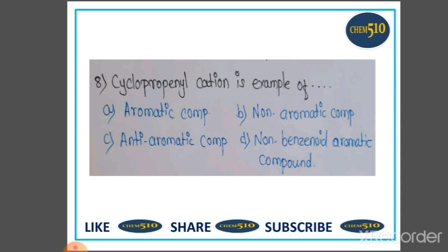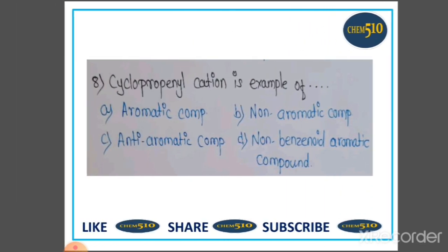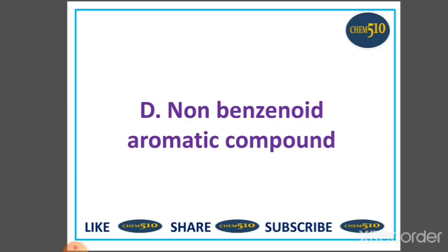Eighth question: Cyclopropyl cation is an example of — Option A: aromatic compound. Cyclopropyl cation is an example of non-benzenoid aromatic compound because cyclopropyl cation does not have a benzenoid-like structure. So option D is correct: non-benzenoid aromatic compound.